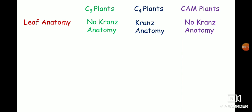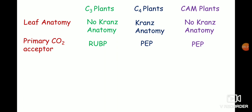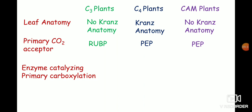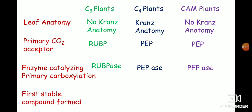C4 plants show a dimorphic type of chloroplasts, meaning there are two types of chloroplasts. The chloroplasts present in mesophyll cells have well-developed grana, whereas the chloroplasts present in the bundle sheath cells are grana-less. The primary carbon dioxide acceptor in C3 plants is RuBP (ribulose 1,5-bisphosphate), whereas the primary carbon dioxide acceptor in C4 and CAM plants is phosphoenol pyruvic acid. The enzyme catalyzing primary carboxylation in C3 plants is RuBPase or Rubisco, whereas in C4 and CAM plants it is PEP carboxylase. The first stable compound formed in C3 plants is phosphoglyceric acid, whereas in C4 and CAM plants the first stable compound is oxaloacetic acid.